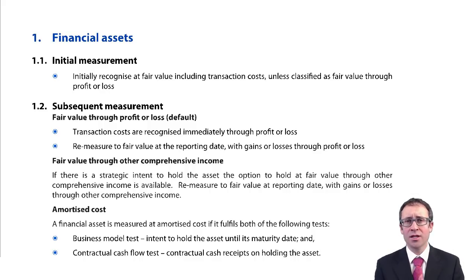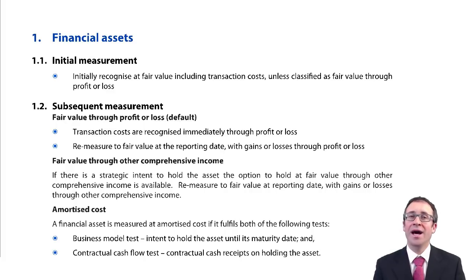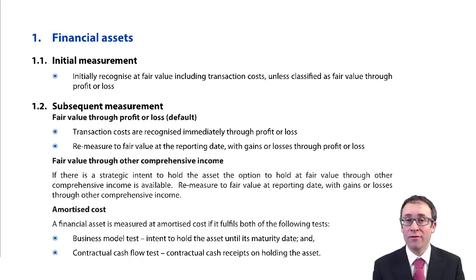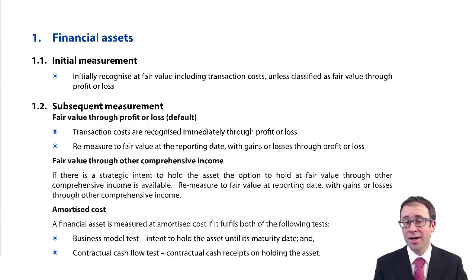It's all about how we account for the investment in shares and how we account for the investment in debt. When we look at financial assets, there are effectively two ways to measure them: either at fair value or at amortised cost. We need to look at initial measurement, then subsequent measurement — where gains and losses go, whether to profit or loss or other comprehensive income — and also the amortised cost methodology.